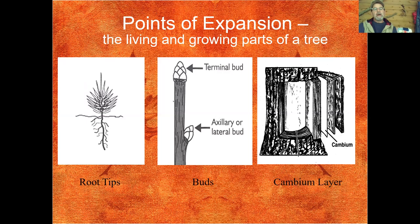Trees expand in three different directions — three different points of expansion. The first is root tips, expanding outward and downward on a regular basis. The tree also grows on the tip of its crown — the terminal bud and the axillary or lateral bud — constantly going out and trying to find new sources of sunlight. And finally, the tree expands in girth too. The cambium expands each year.